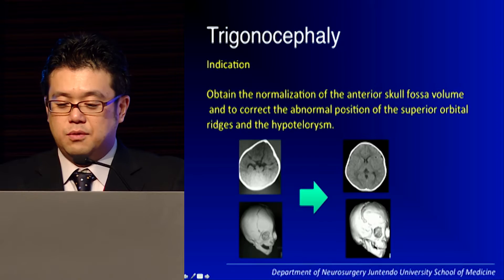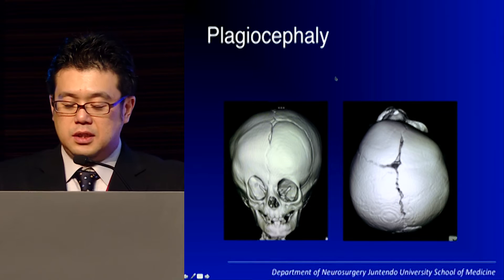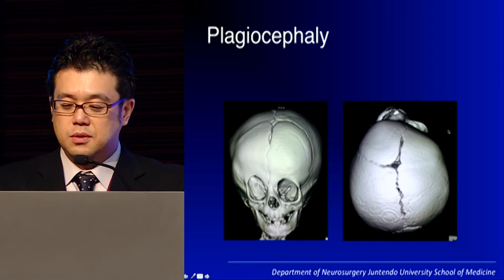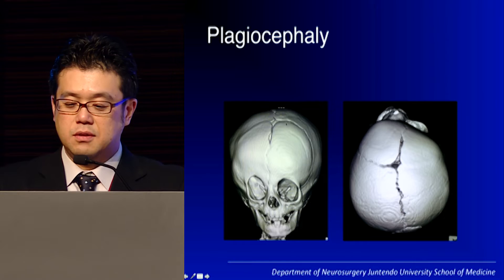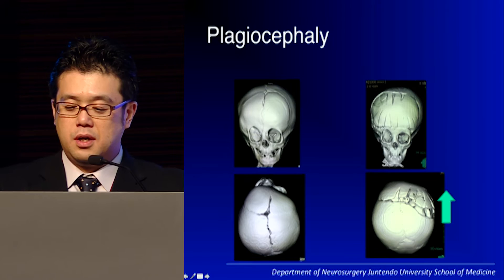You can see the nicely formed forehead compared to before the surgery. Moving on to plagiocephaly — 'plagio' is a Greek word meaning oblique or slanted. You see fusion of the unilateral coronal synostosis, with flattening of the forehead and deformation of the orbit and facial bone. In surgery, we remove the frontal bone and the orbital bar and advance it anteriorly.